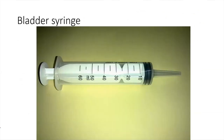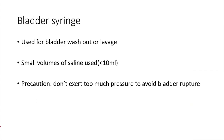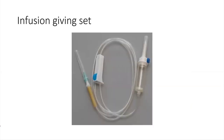The bladder syringe is identified by its cone-like tip and is a 60 mL syringe. It is used for bladder washout or lavage. Small volumes of saline — less than 10 mL — are used. Do not exert too much pressure to avoid bladder rupture.